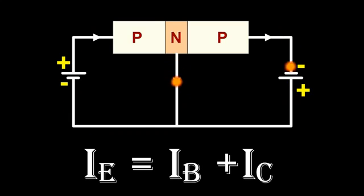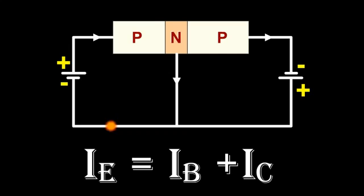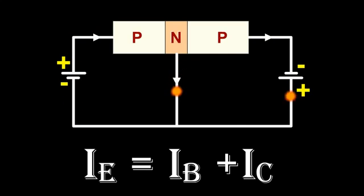This equation is the fundamental relation between the currents in a transistor circuit. This equation is true regardless of transistor type or transistor configuration. The action of an NPN transistor is similar to that of a PNP transistor.